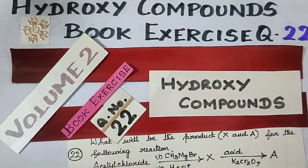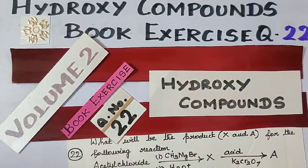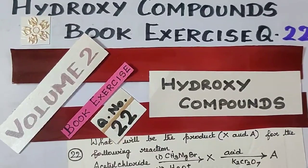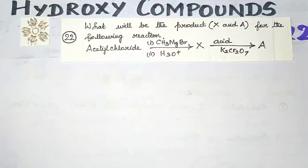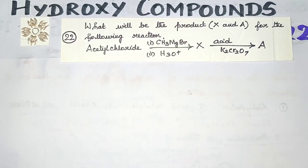Hello students, welcome. Hydroxy compounds chapter book exercise questions, question number 22 solve. We have to find out two products: one is X and the other one is A. Let's see what the question is — what will be the product X and A for the following reaction?